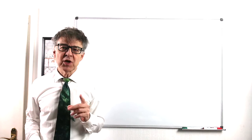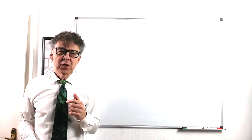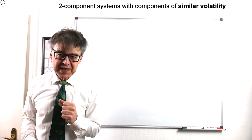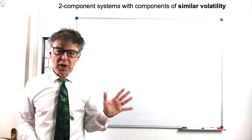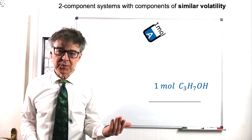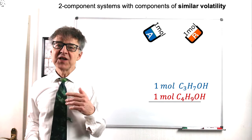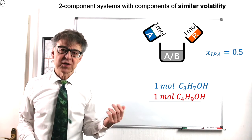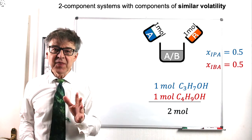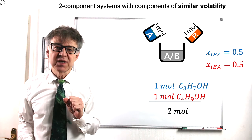Let's start with a mixture of alcohols as an example, which will guide us through this lecture. We mix one mole of liquid isopropyl alcohol, short IPA, and one mole of liquid isobutyl alcohol, short IBA, and heat this mixture to 92 degrees Celsius.